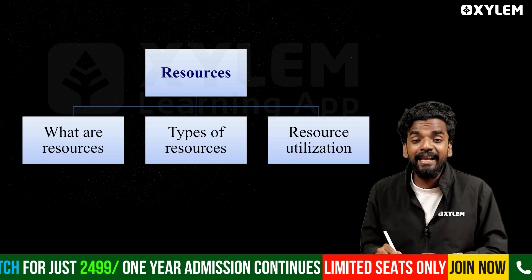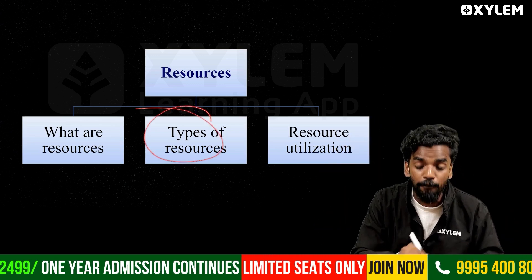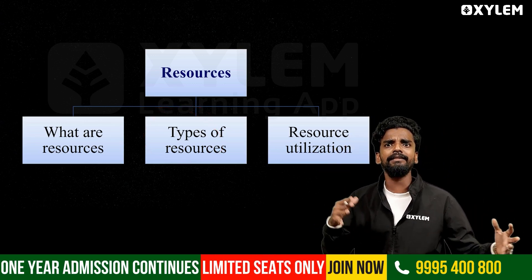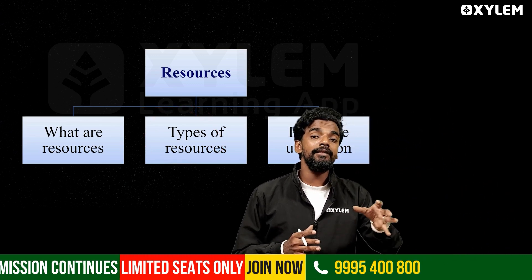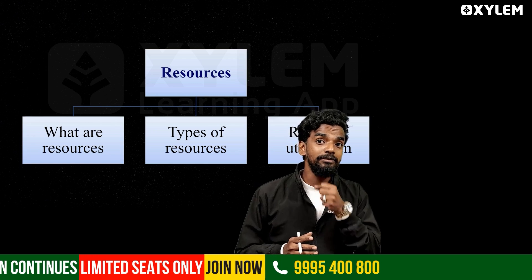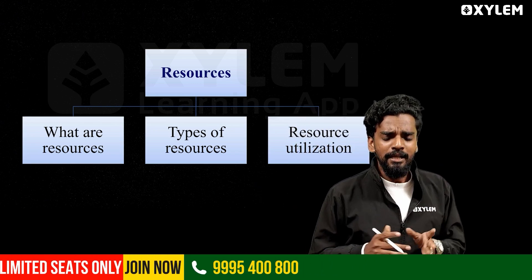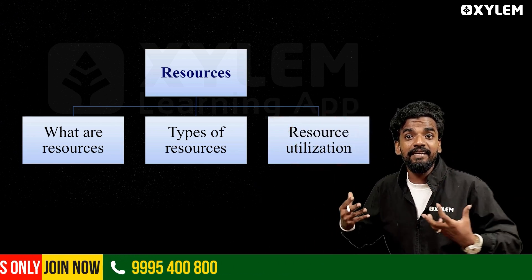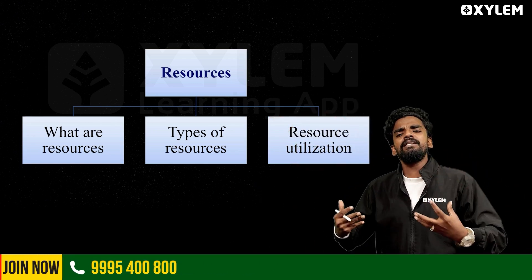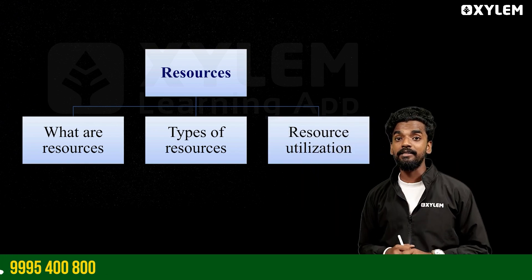The second thing we are discussing is about the types of resources — which are the types of resources. We can divide the resources into three types, in other words resource utilization. These resources are divided into three types of resources.